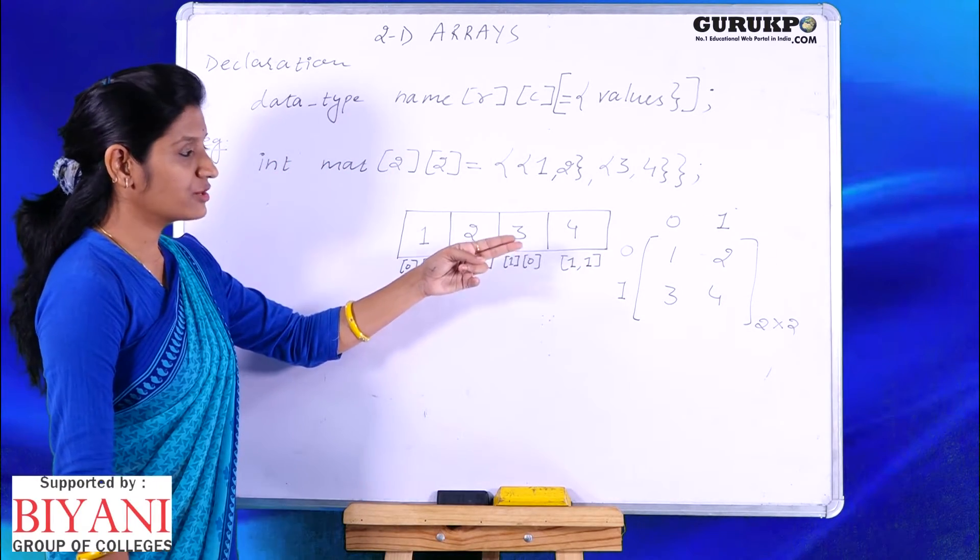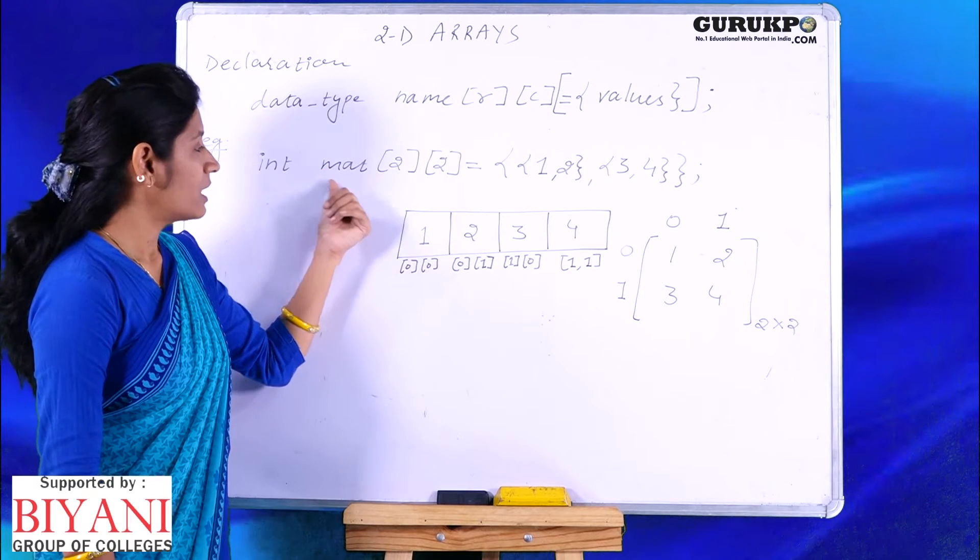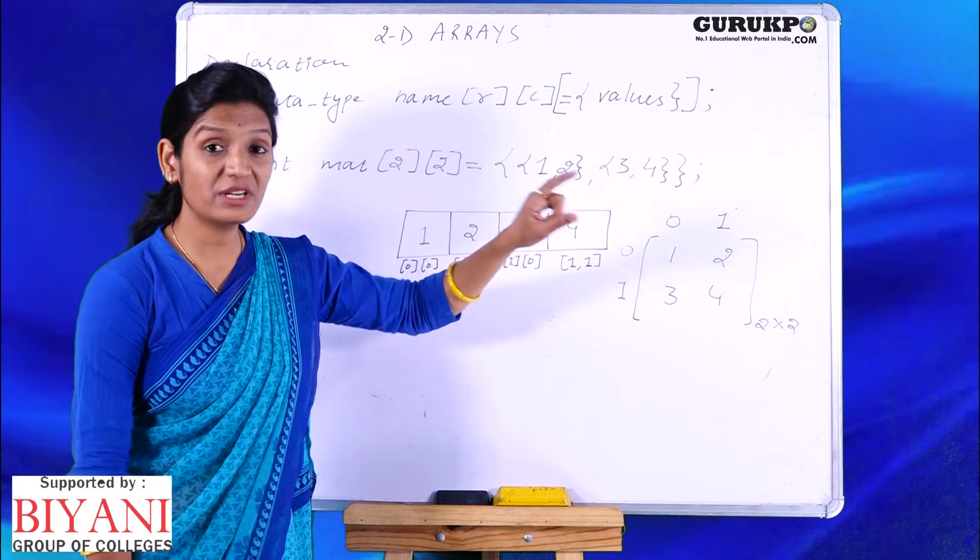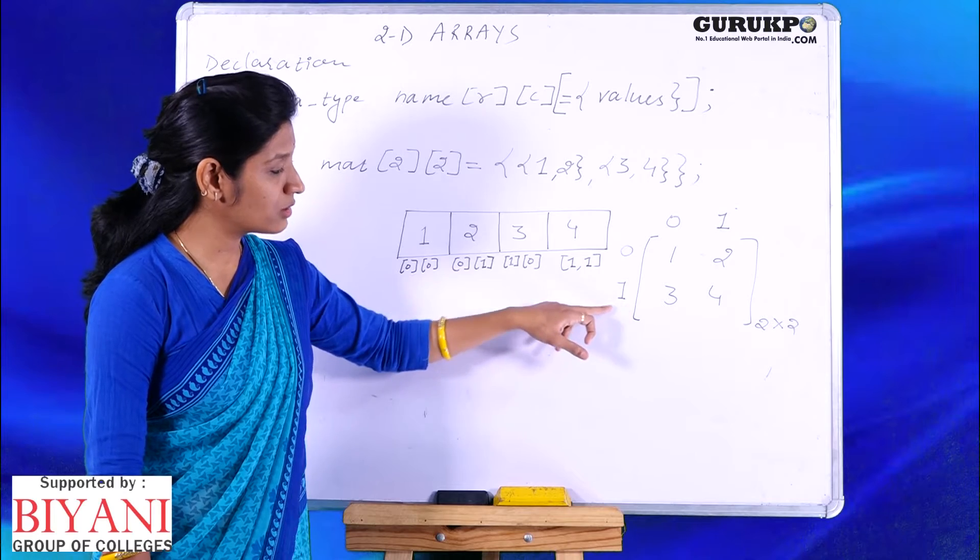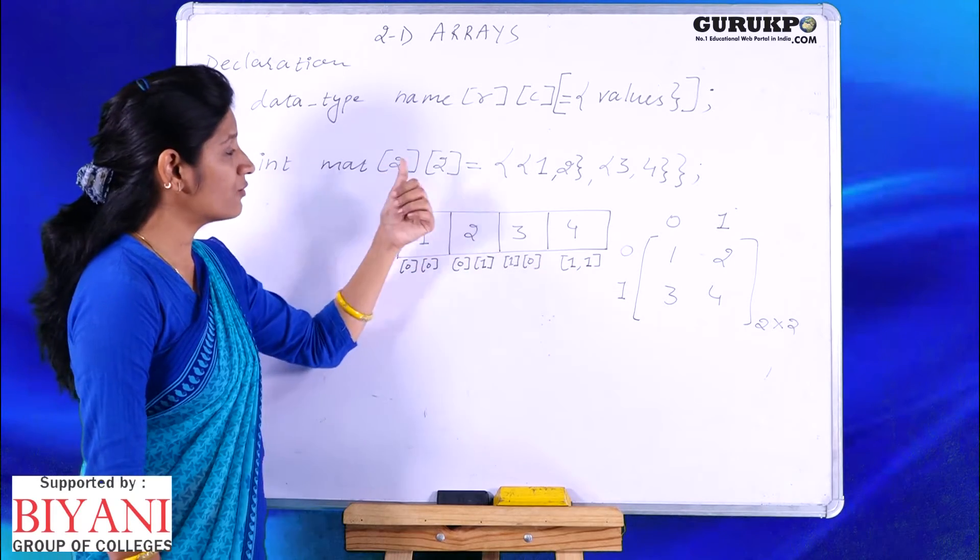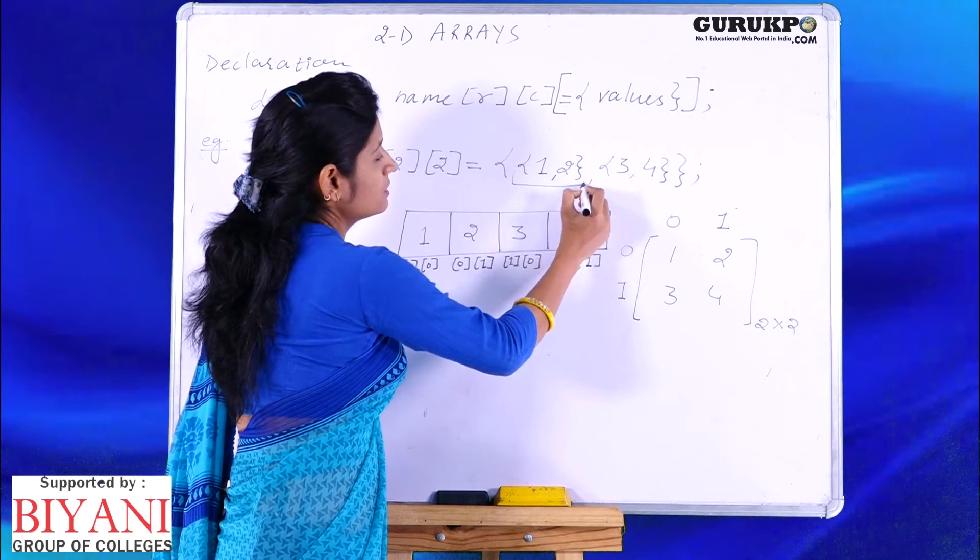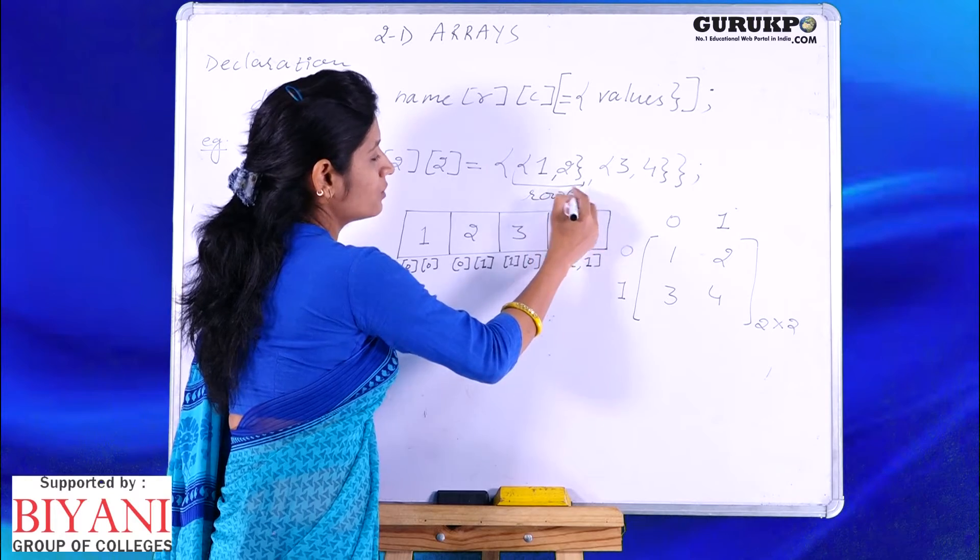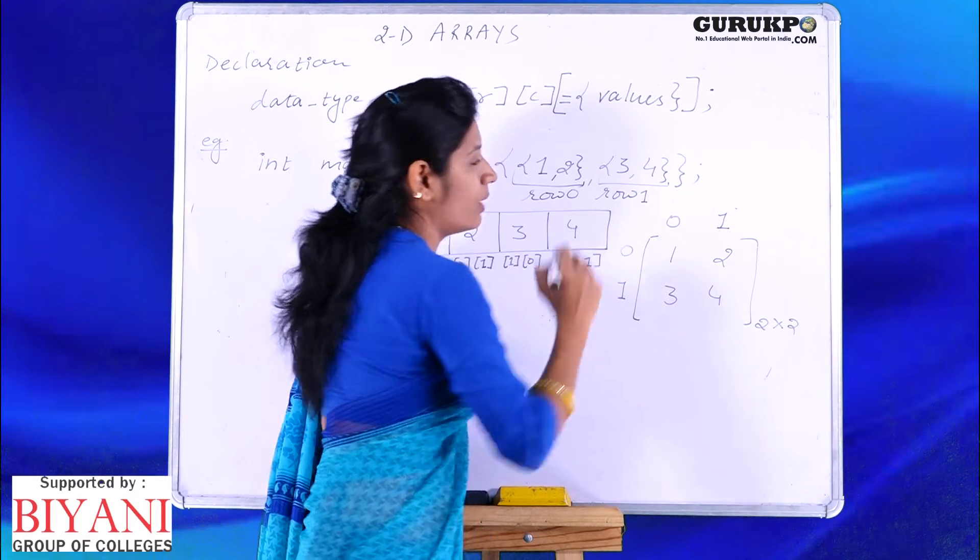Suppose we are taking integer values. The data type will be int, the name of the array is mat. This is the first dimension which will represent the number of rows. We have two rows, it will represent the number count, not the number of index. Suppose the row number is 0 and 1, you will specify here the total number count. So two number of rows and two number of columns, then initial values will be given. The values in the first set of curly braces will be row 0, and in the second set it will be row 1.